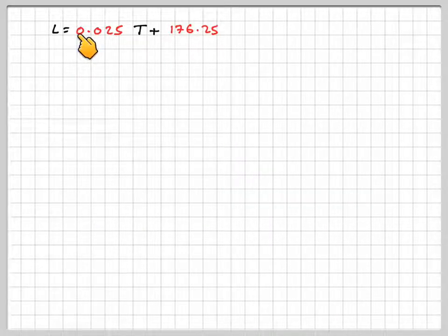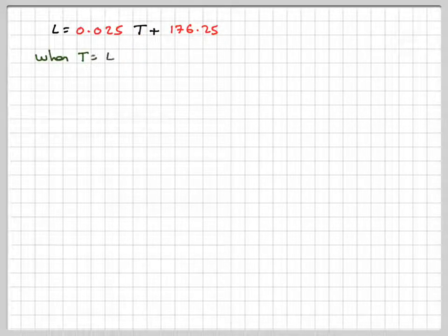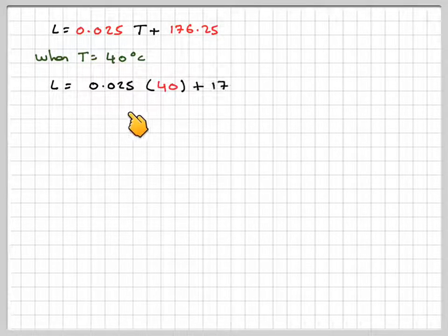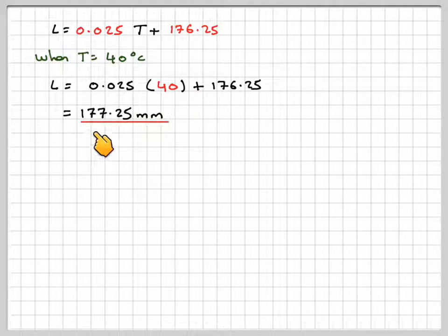Coming up with our equation, our equation now is L equals 0.025T plus 176.25. When T equals 40 degrees C, we're going to get that L equals 0.025 times 40 plus 176.25. Working that on my calculator, it gives me 177.25 millimeters.